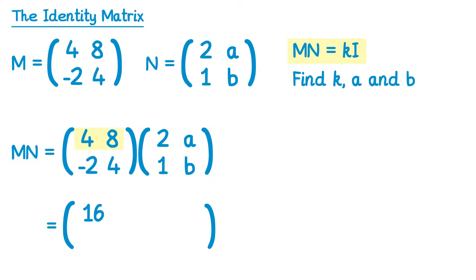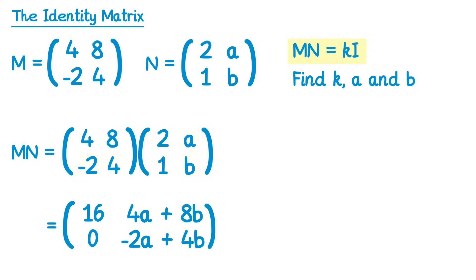Then four, eight with a, b: four times a is four a, eight times b is eight b, giving four a plus eight b. Then negative two, four with two, one: negative two times two is negative four, four times one is positive four, and negative four plus four gives zero. Finally, negative two, four with a, b: negative two times a is negative two a, four times b is four b, so we get negative two a plus four b.